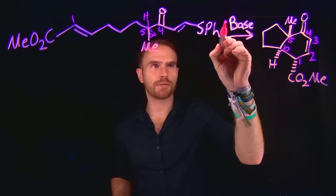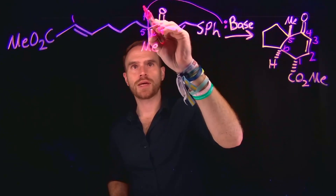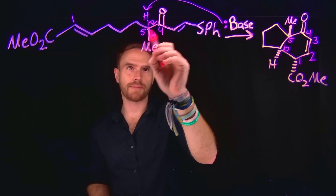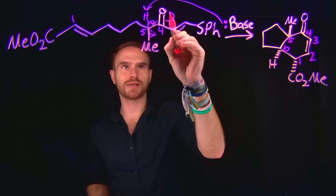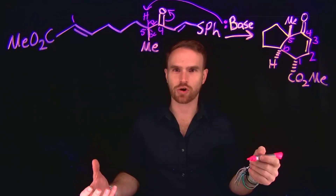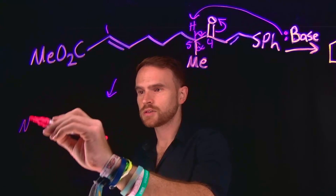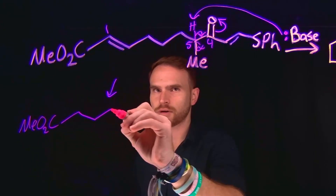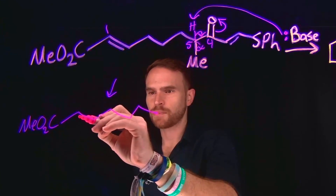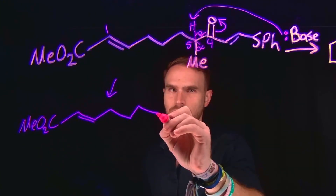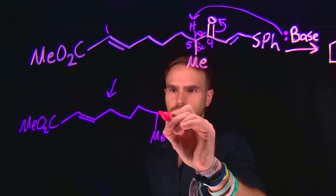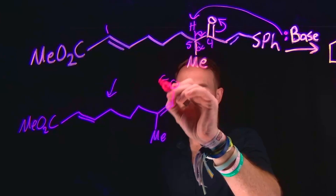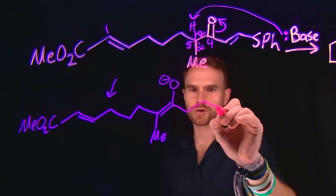If we consider enolate formation to be the very first step, then we can deprotonate this carbon-hydrogen bond, move the electrons here to make a brand new alkene, kicking up these pi electrons to make a negatively charged oxygen. So now I can redraw the starting material using the formation of that enolate species. I have these different carbons here, I know that there's a pi bond at this location, I still have this methyl group located here, now with a new pi bond between these two carbons, a negatively charged oxygen, and the rest of the molecule remains the same.